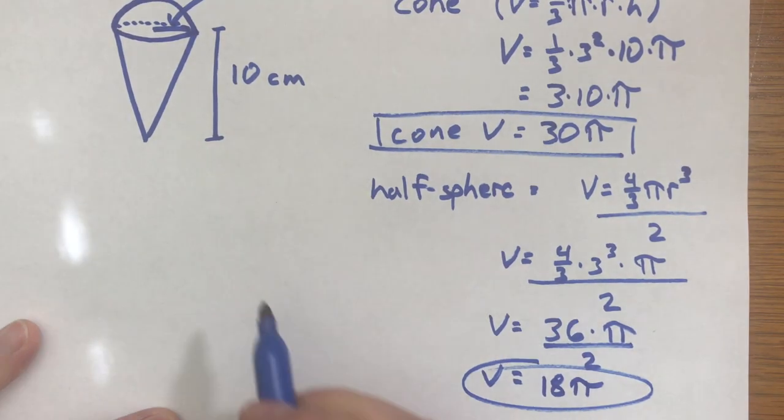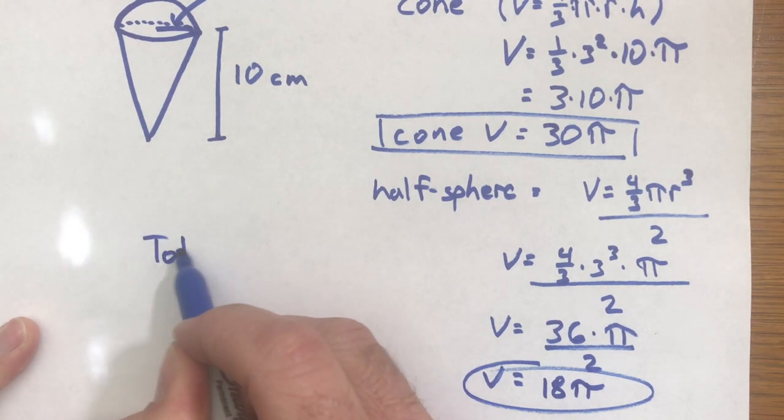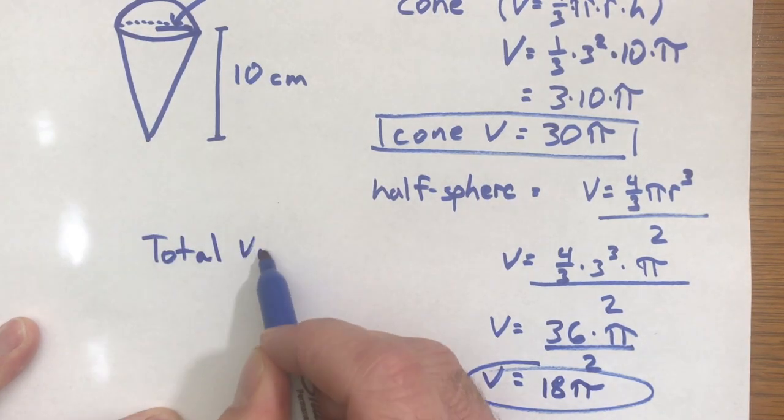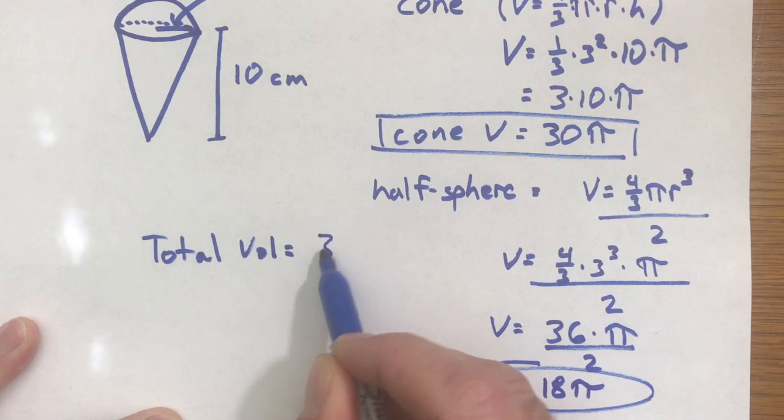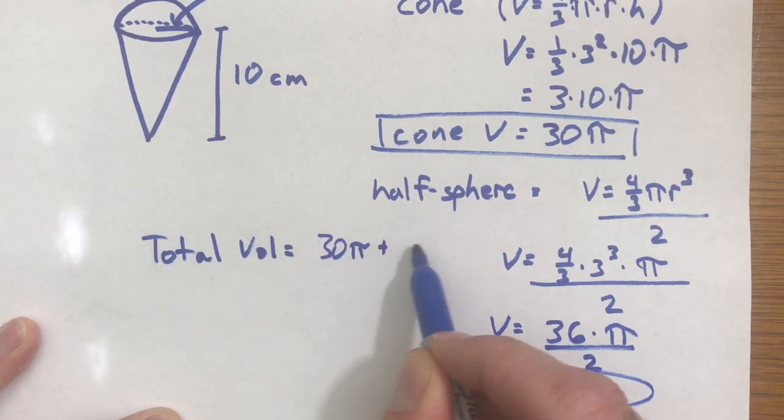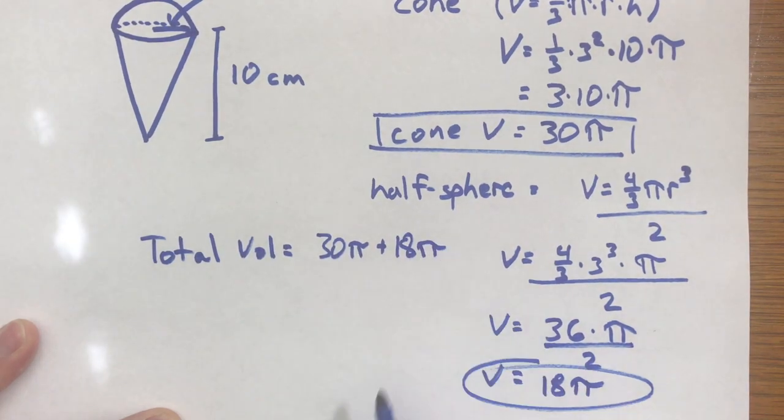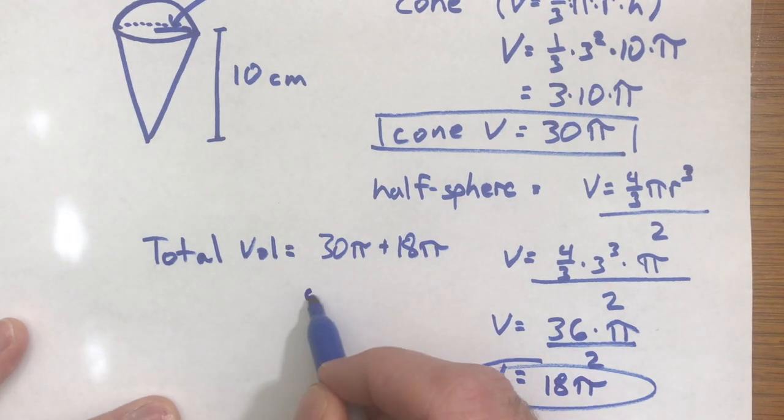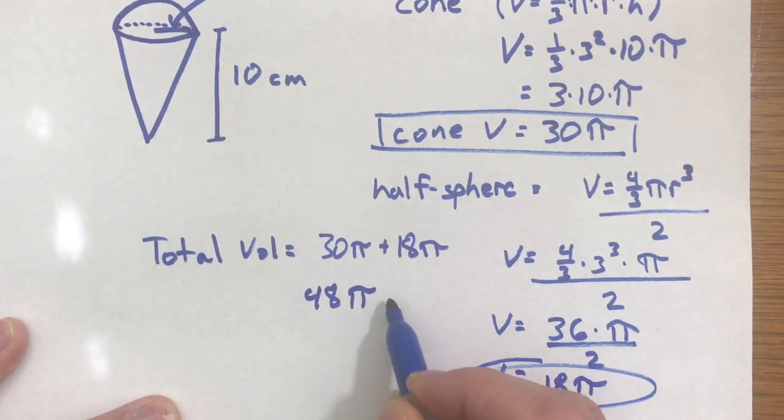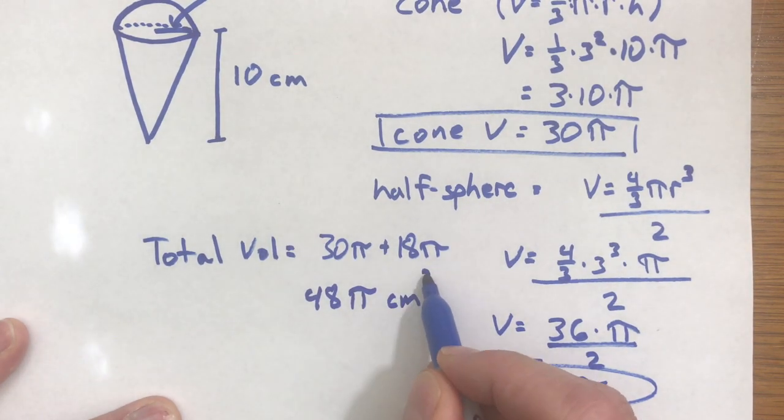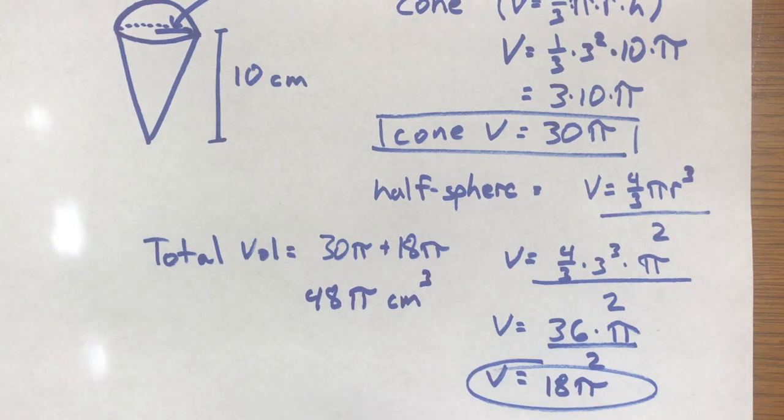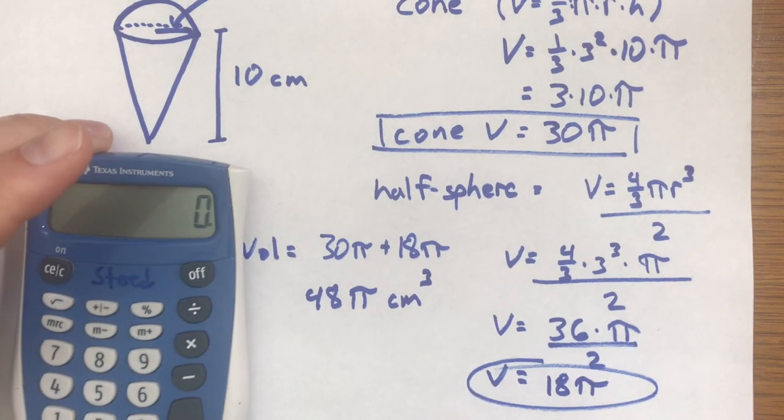So now we need to add our 18 to our 30 and that will give us the complete volume. So total volume is 30 pi plus 18 pi. So that's going to be 48 pi cubic centimeters. So now that's the exact value.